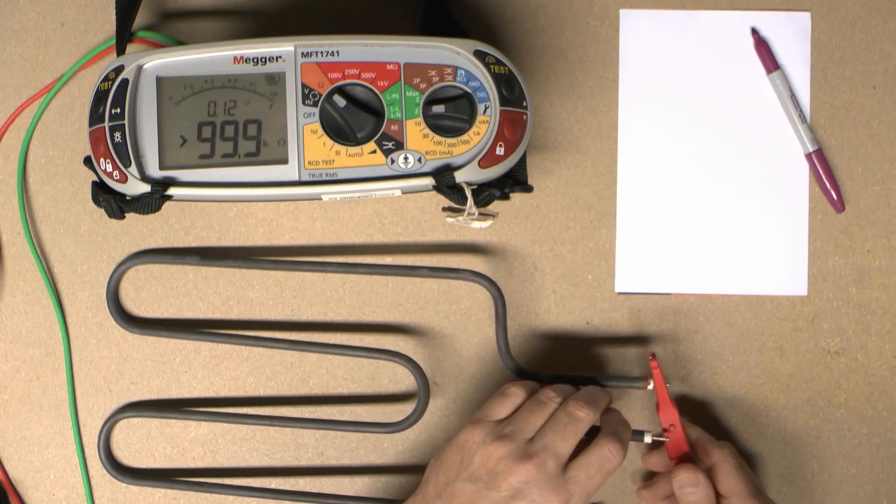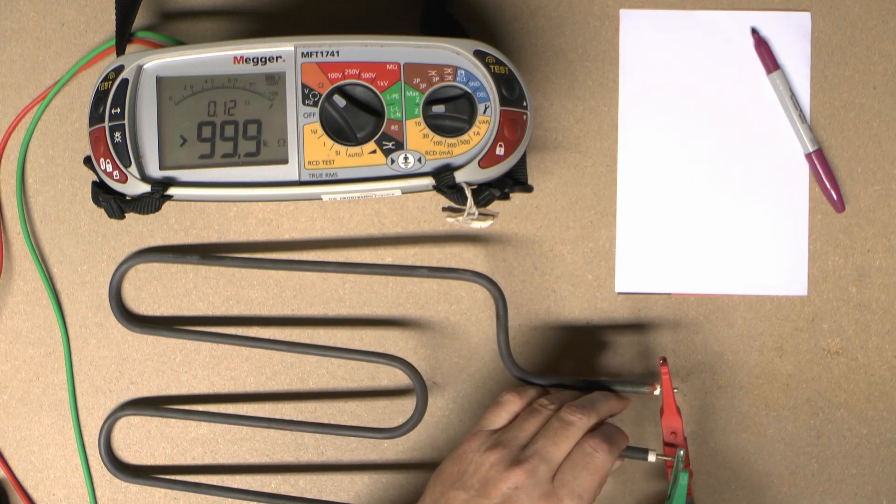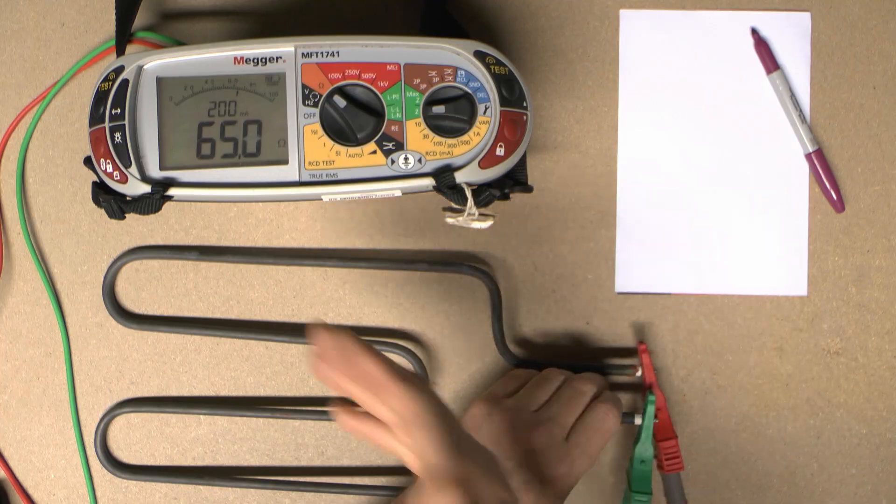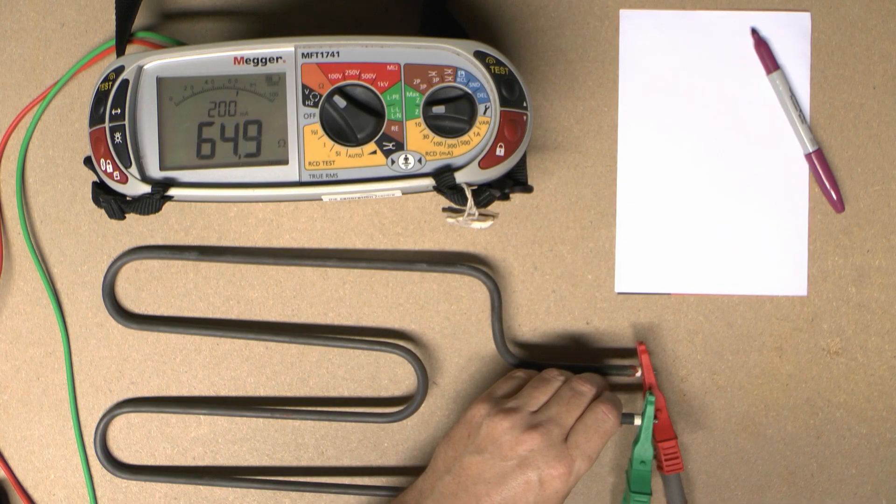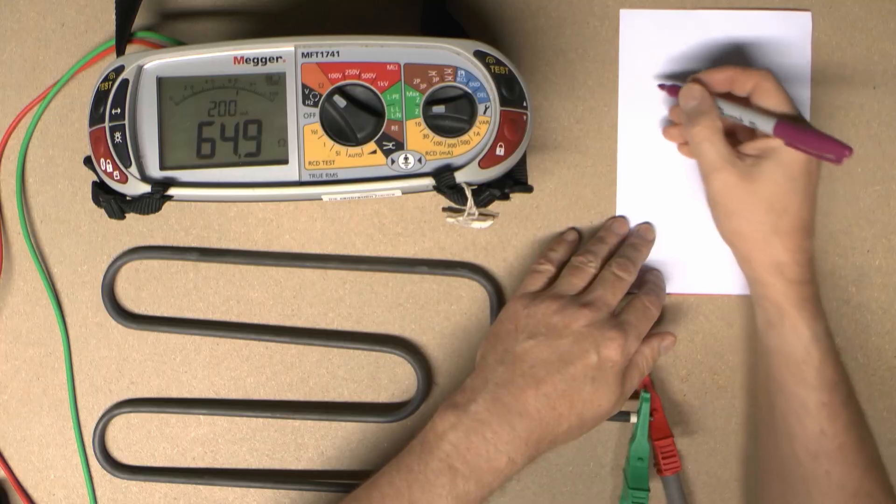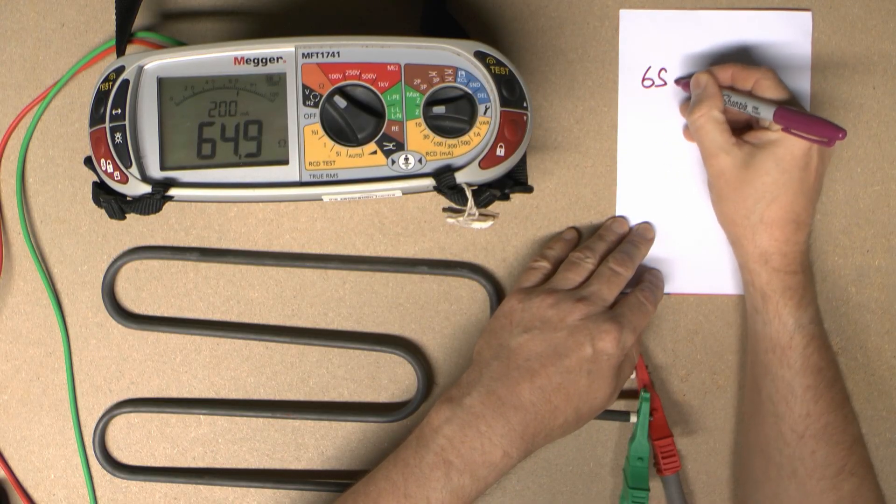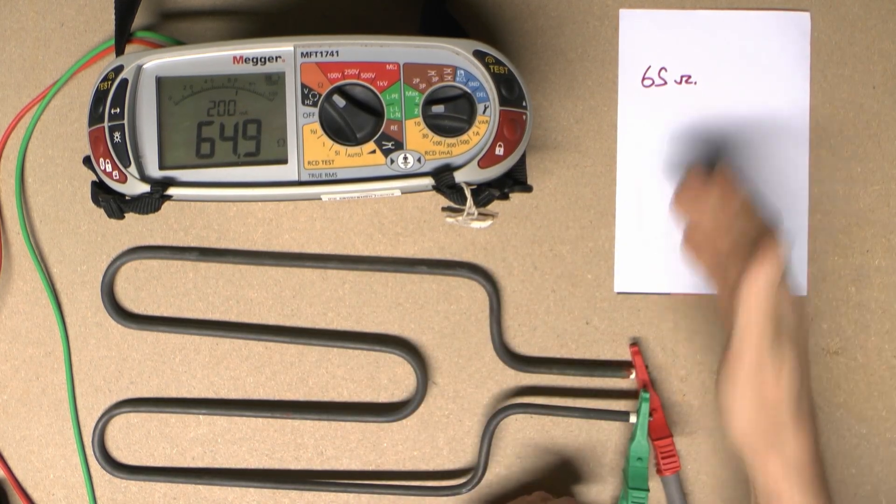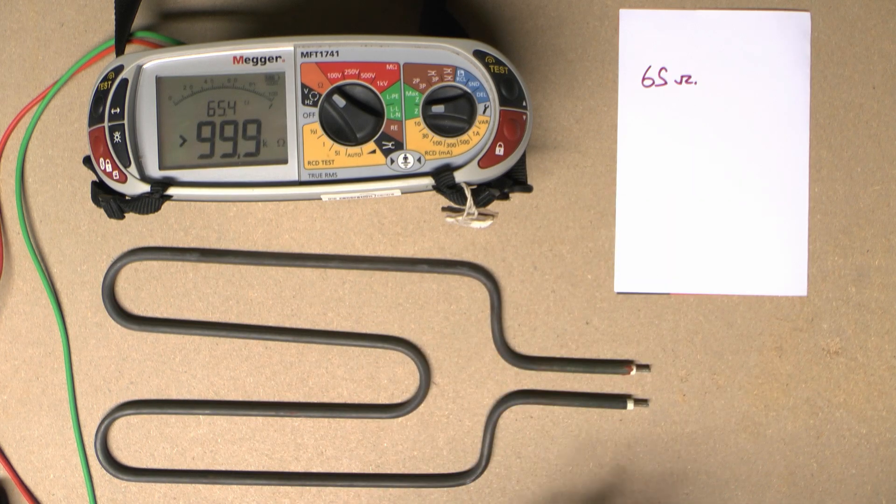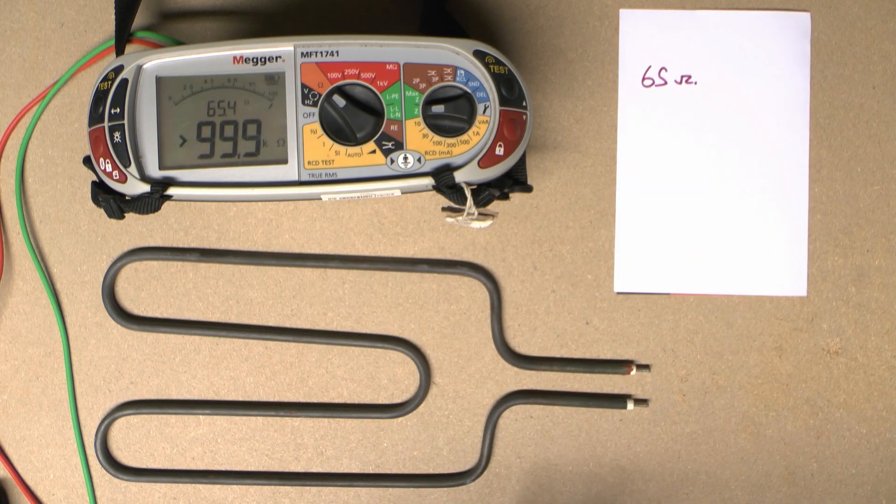We'll connect up to the pins here and see what we get. In this case, it's 64.9 ohms, or say 65 ohms. I'll make a note of that: 65 ohms. Now, that value depends on the power of the heating element. We can do a quick calculation in a moment to verify what that is.